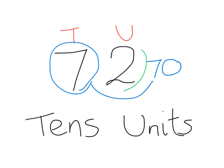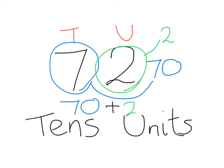And 2 units, or 2 ones, is 2. So we can think of 72 as 70 add 2, or 7 tens and 2 units.